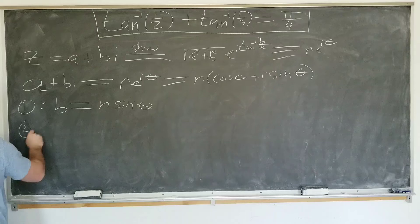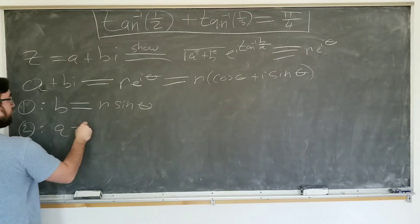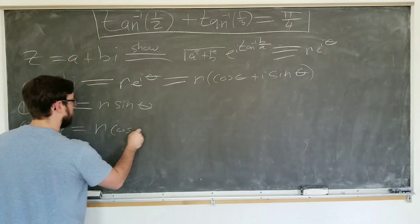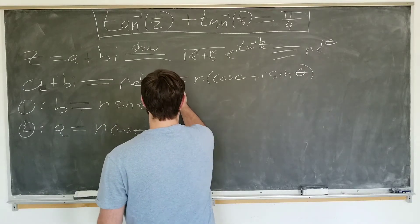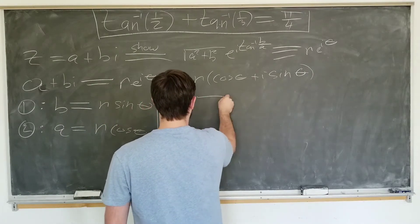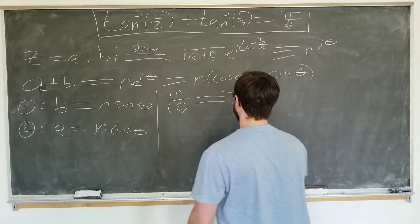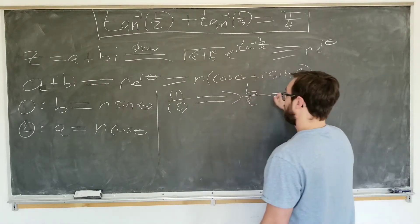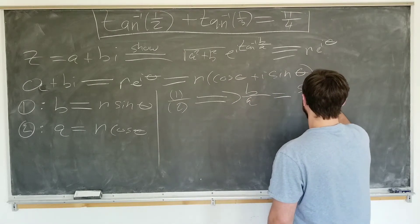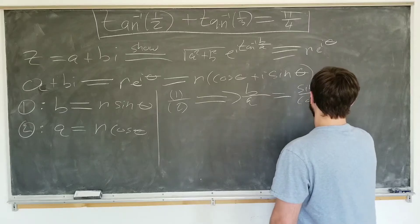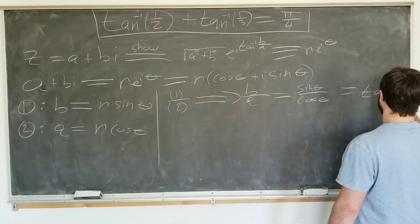And equation two says that a is equal to r cosine theta. Now we're going to take equation one divided by equation two. This tells us that b over a equals sine theta over cosine theta, which is tangent theta.